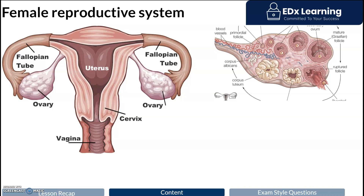This is our first video on our pregnancy and hormones section. This is targeting the HBC biology module 5 dot point to investigate the hormonal control of fertilization, implantation and pregnancy.